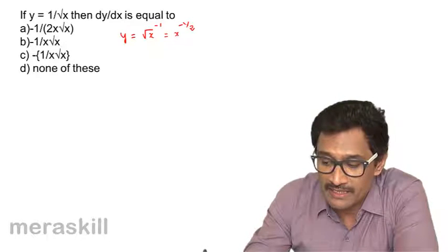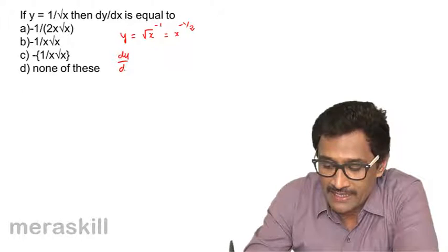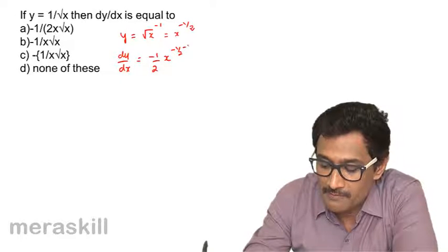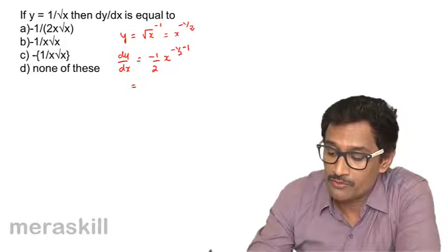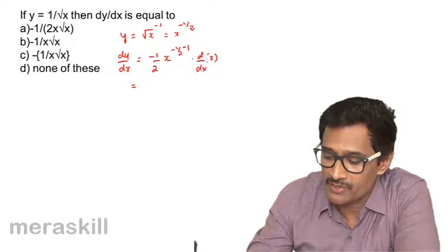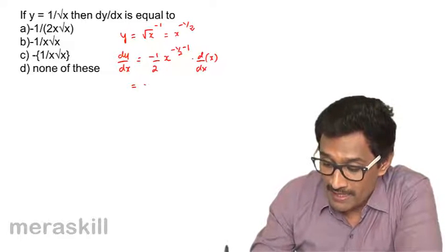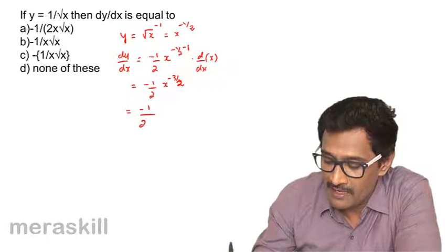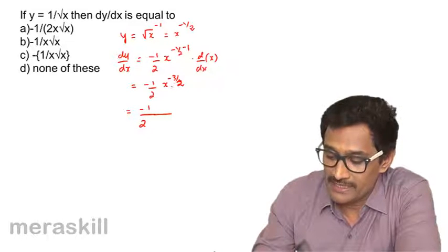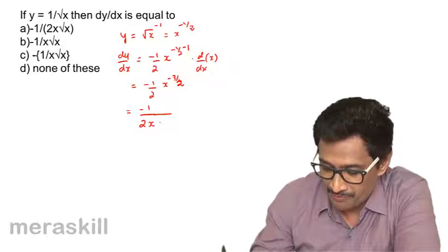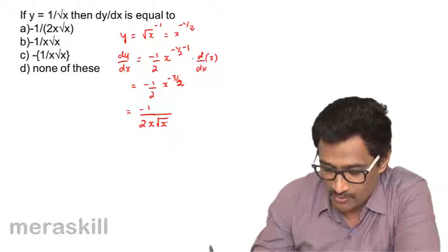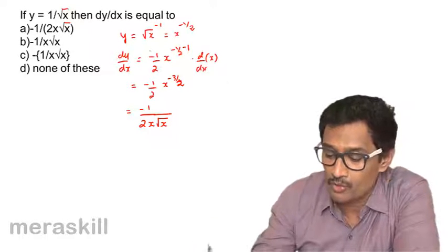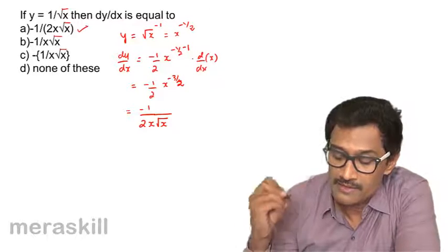So n is going to be minus half. It is x raised to minus half, so dy by dx is going to be minus half times x raised to minus half minus 1. We also need d by dx of x, which is 1. This is going to be minus half into x raised to minus 3 by 2. Among these options, this is the correct answer.